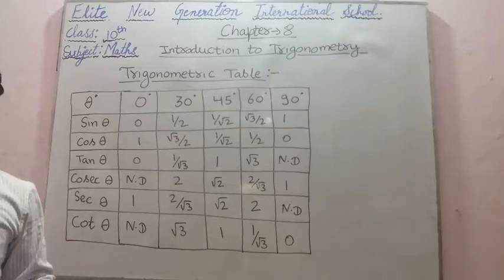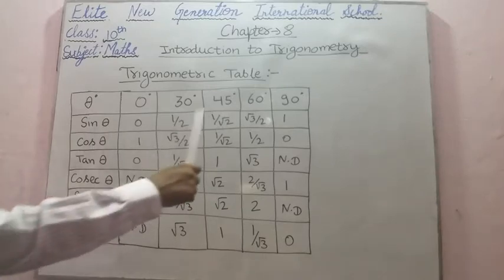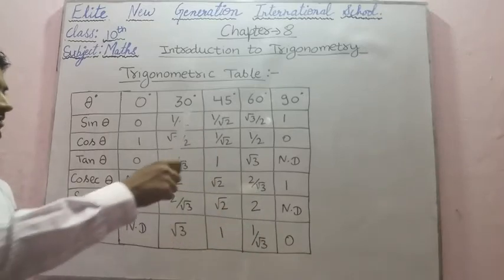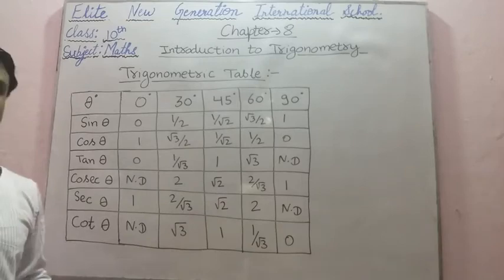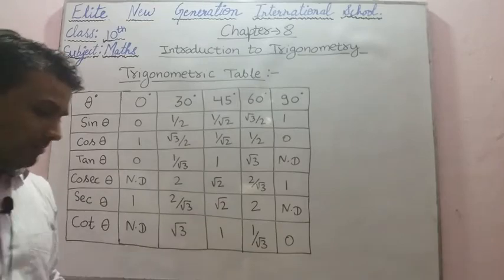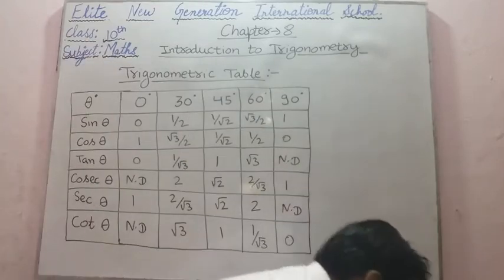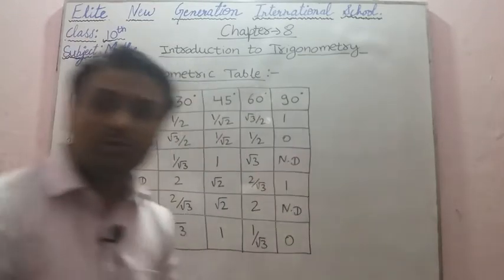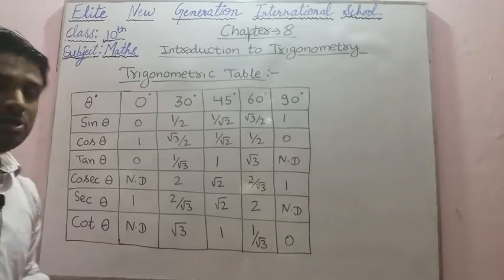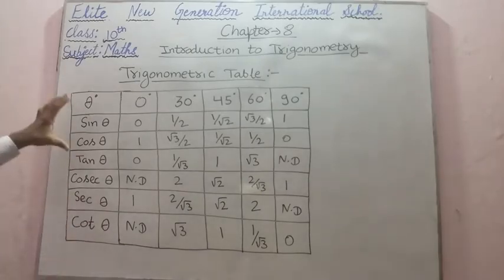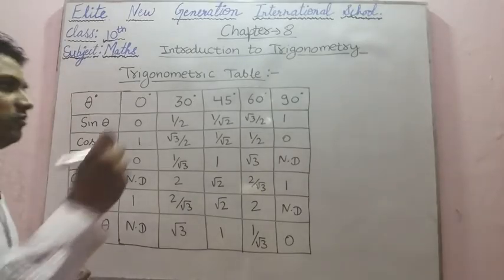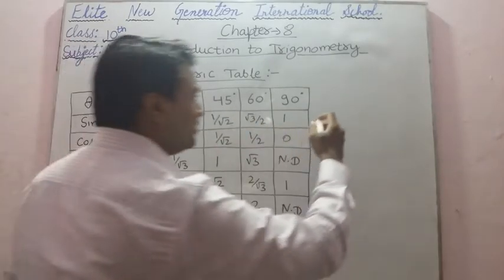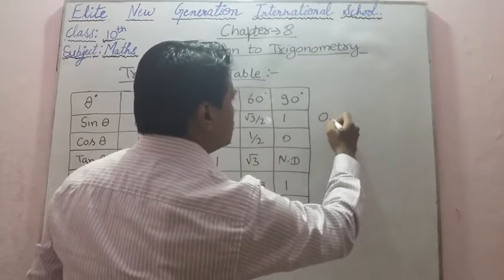So here we can also draw this trigonometric table. I am telling you one way how to draw it. First of all, we have to write the numbers from 0 to 4.